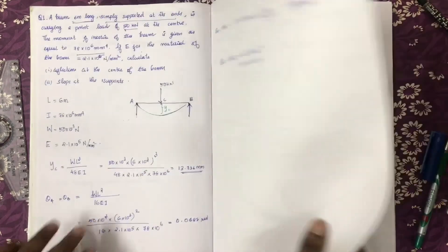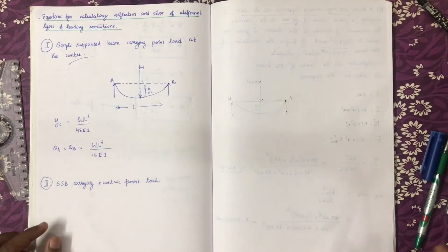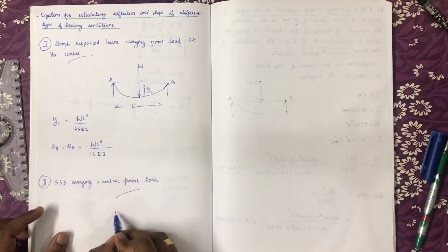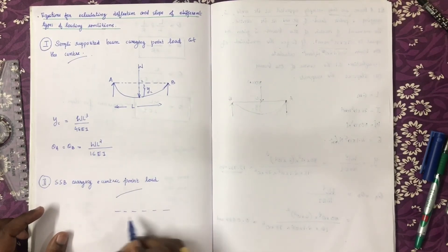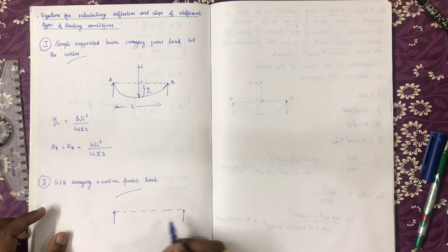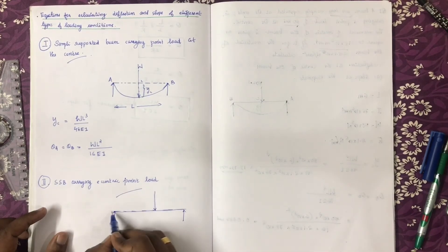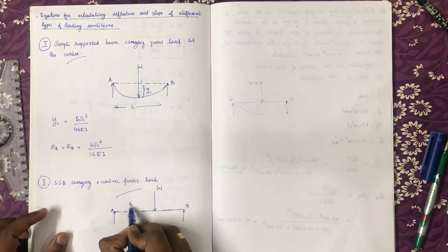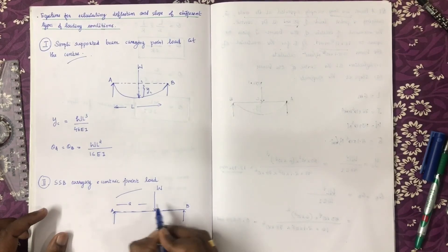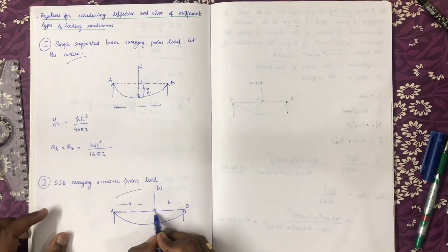Now this is the simply supported beam with eccentric loading case. Here we consider loading at points A and B with the eccentric point load — this is denoted as C.